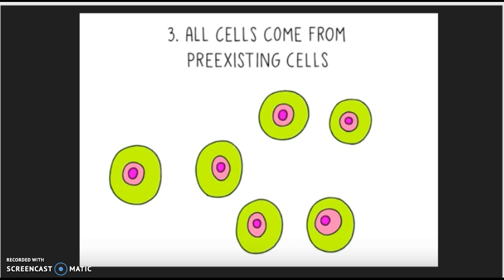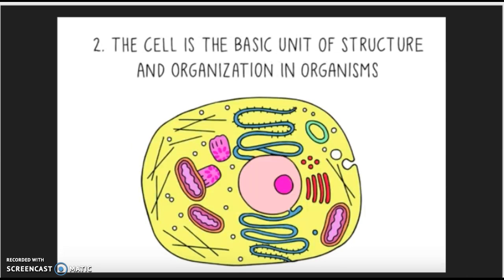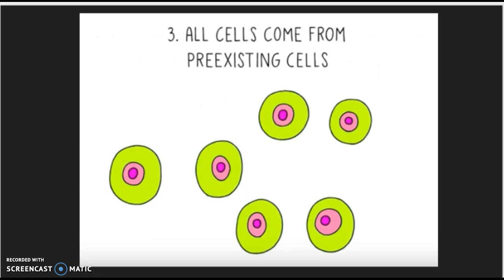To recap: all organisms are composed of one or more cells, the cell is the basic unit of life, and all cells come from pre-existing cells.